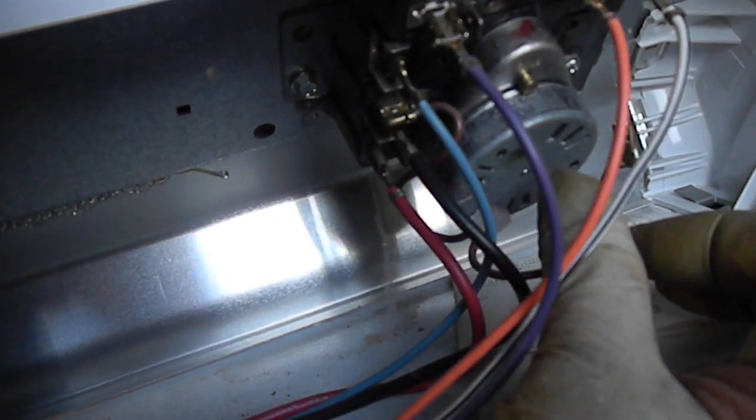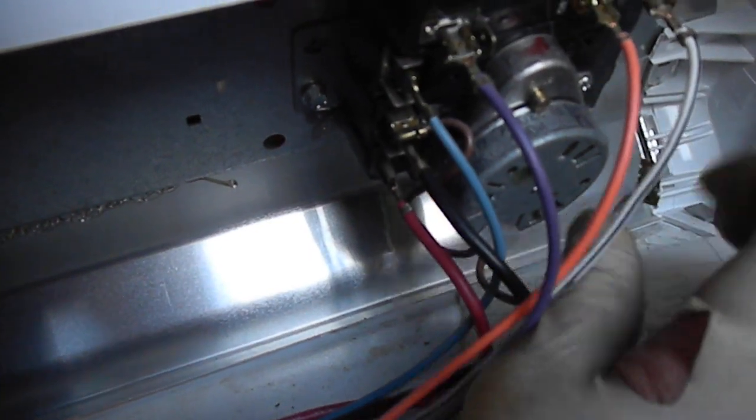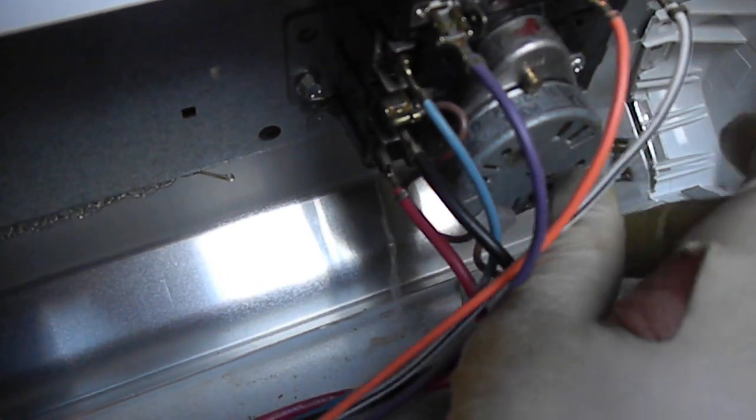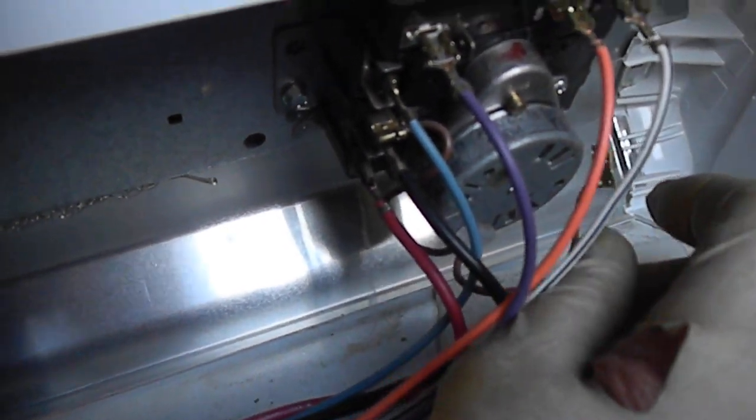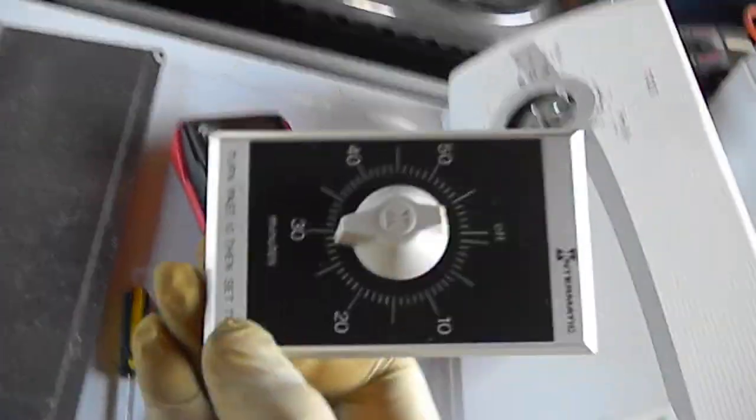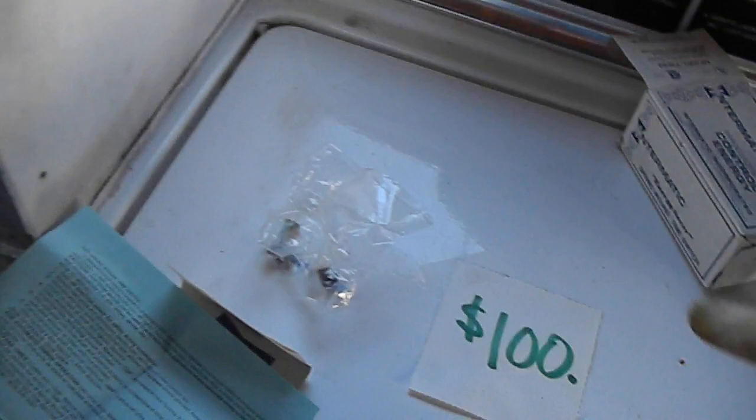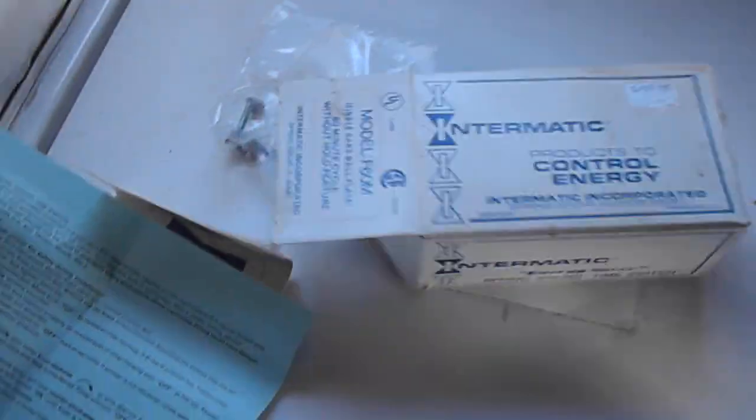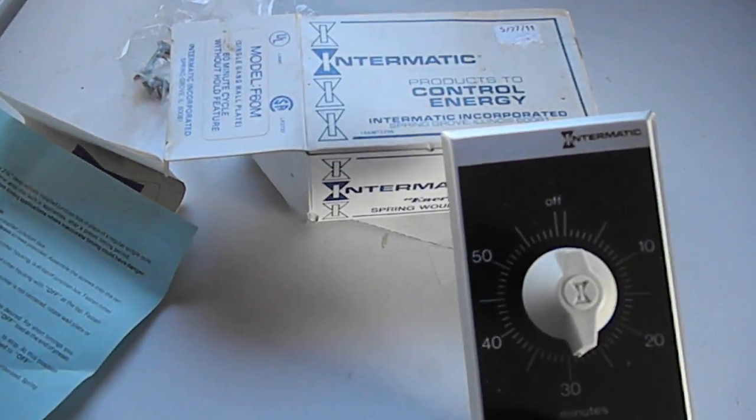In this case, we don't have voltage at the timer leads, so apparently the timer motor is good. We just need to replace the timer, or you can hook in a generic timer. I usually hook the generic timer onto the door switch lead so that it works that way.